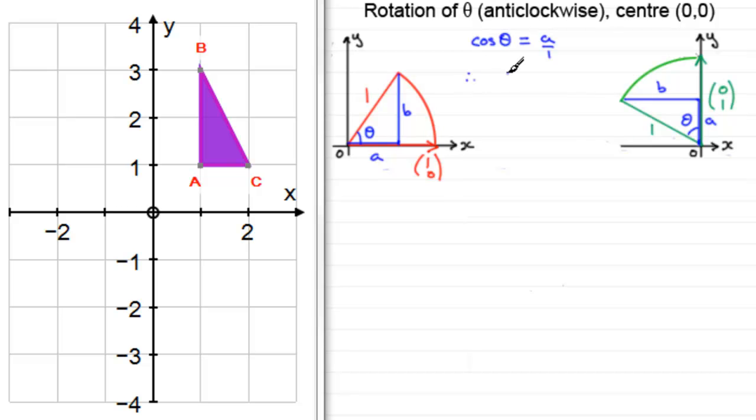Similarly, if we consider the sine of angle theta, sine of angle theta compares the opposite side to the hypotenuse, so that's going to be b over one. If we rearrange this, therefore b must be equal to sine theta.